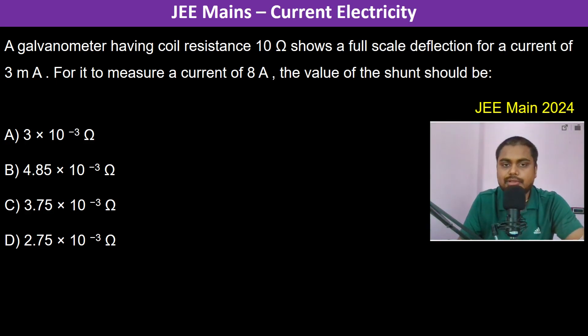A galvanometer having coil resistance 10 ohm shows a full scale deflection for a current of 3 milliampere. This is having a coil resistance of 10 ohm and a current of 3 milliampere. To measure a current of 8 ampere, the value of the shunt should be?